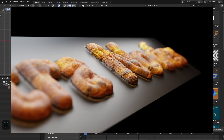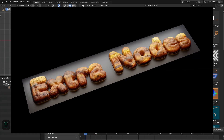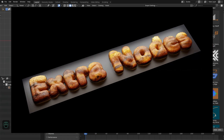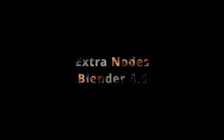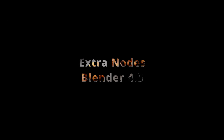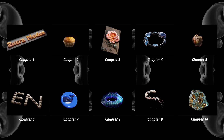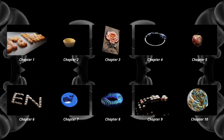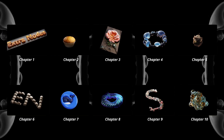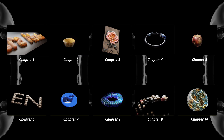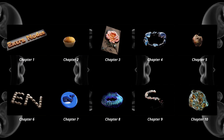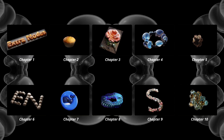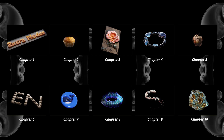Hello everyone. This is the first chapter of the Inflated Motion Graphics series. In this video, we are going to create text motion graphics using the Extra Nodes — specifically the Resimetry Nodes in Blender 4.5. The complete series is available on my Patreon page, where I'll show you how to create these kinds of motion graphics for different examples and projects. You will get all the project files and assets. The link is in the video description.